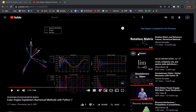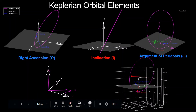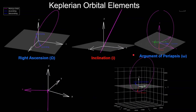For more details about Euler angles and reference frames in general, there are other videos on that in the numerical methods with Python series — links will be in the description. Now, turning to the Keplerian orbital elements: the goal is to describe the orbit reference frame with respect to the inertial frame using three angles in a 3-1-3 Euler angle sequence.